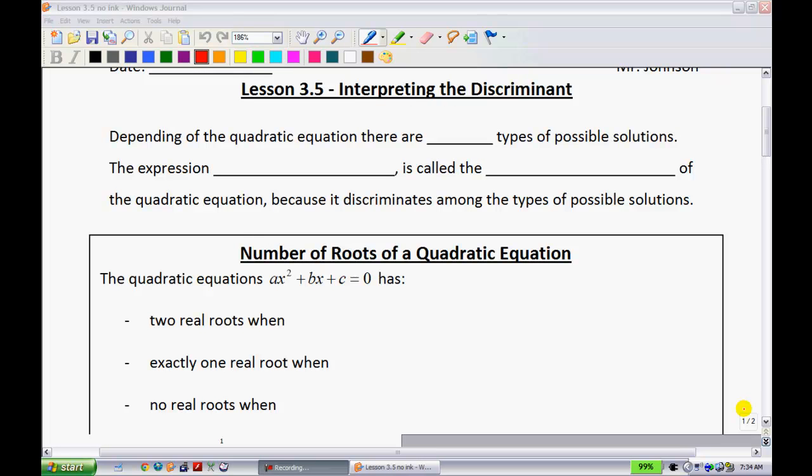Alright, lesson 3.5, interpreting the discriminant. This is the last lesson of the unit. This one's kind of interesting, because what we do is we learned about the quadratic formula in the previous lesson.